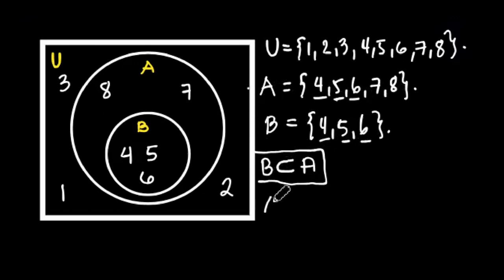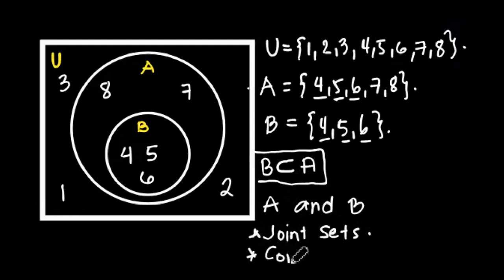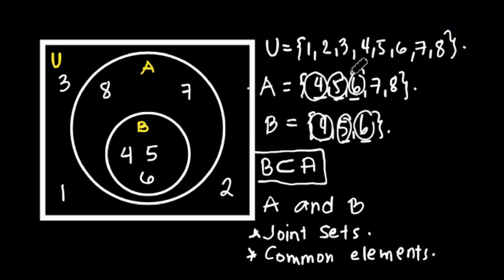Then we could say that A and B, in this case, we can call them joint sets. Joint sets because they have common elements. What are their common elements? The common elements in set A and set B are 4, 5, and 6.